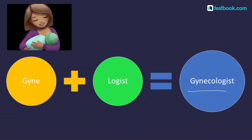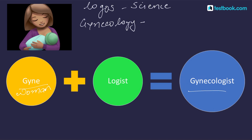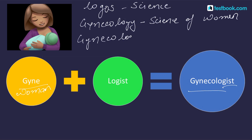The word gynecologist is built on the Greek word gyne, meaning 'women,' plus logos, meaning 'science.' Etymologically, gynecology is the science of women. And gynecologist — because we are adding gyne + logy + ist — means specialist of women. The suffix -logist means specialist.